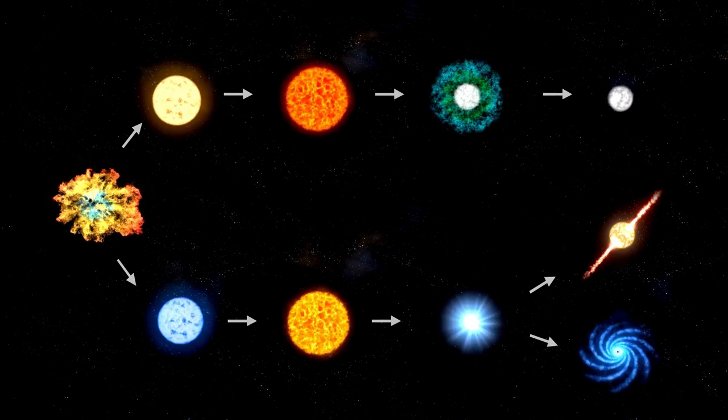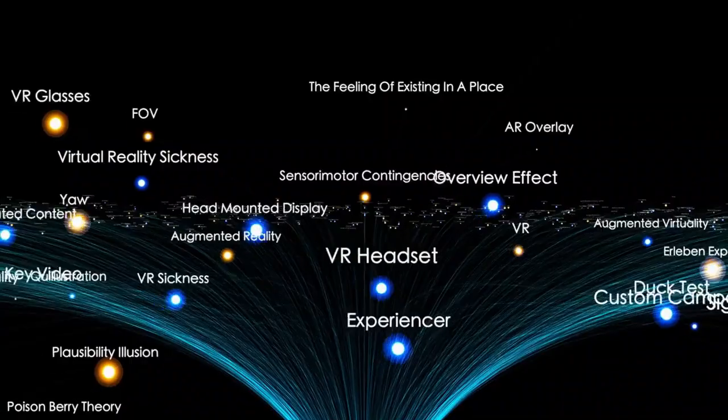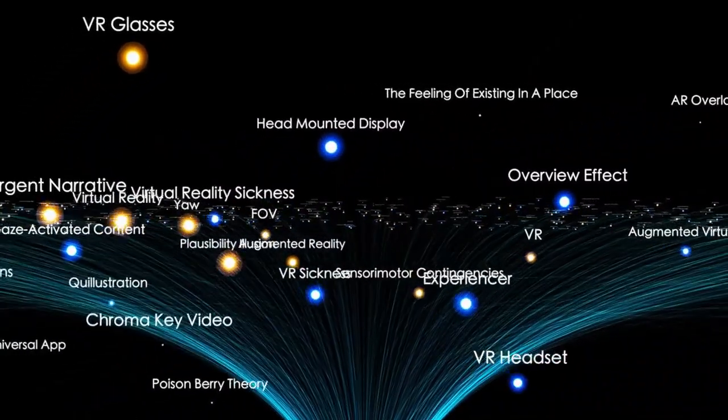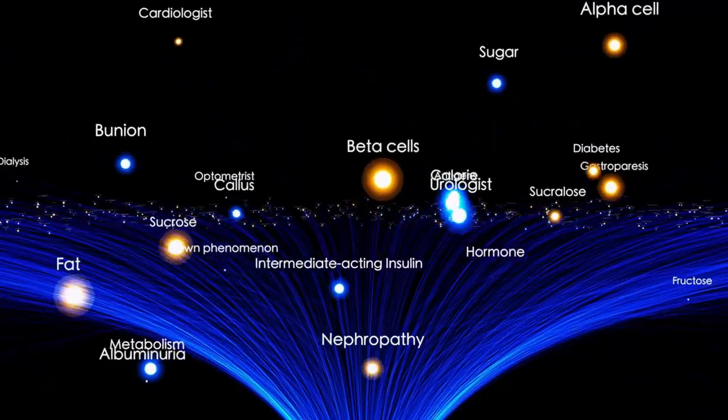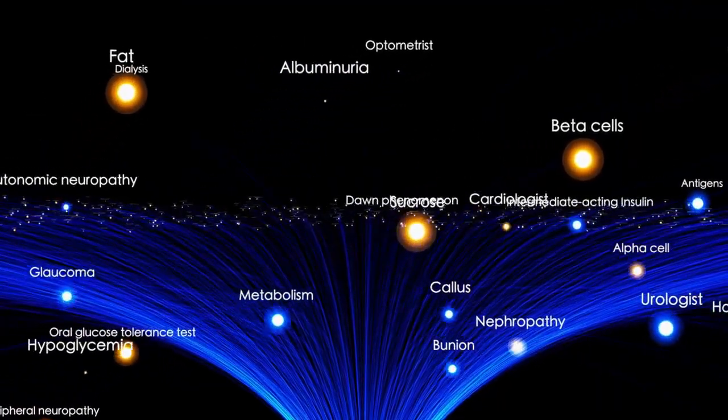Antares is also a variable star, meaning that it undergoes changes in brightness over time, just like Betelgeuse. In addition, Antares has a mass approximately 12 times that of the sun and a radius that is 700 times that of the sun, so it's safe to say that Antares is no slouch in terms of size.